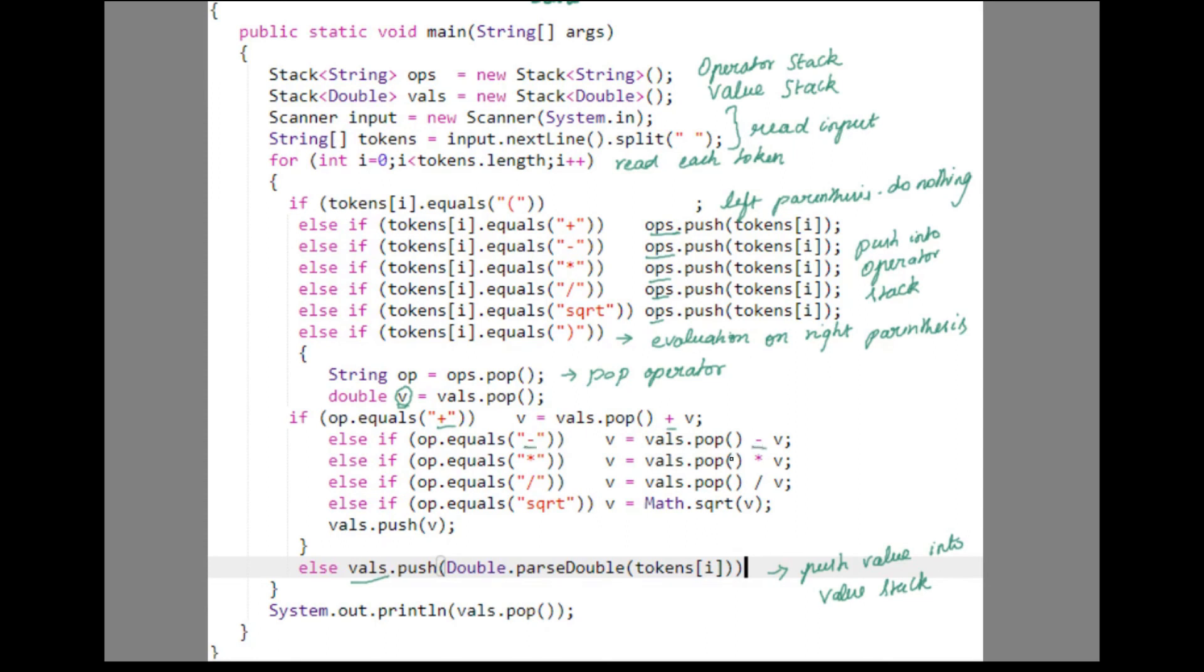We already have one of the values in v. In case of all arithmetic operations you need one more value. So pop another value from the value stack and perform the operation. We are storing the result in v itself. In case of square root you just need only one value which has already been popped out in v. So just compute the square root and store it in v itself. Now the result is in the variable v. So push that result into the value stack. Once you have scanned all the tokens, just exit the loop and then pop the value from the value stack. You will have the final result.